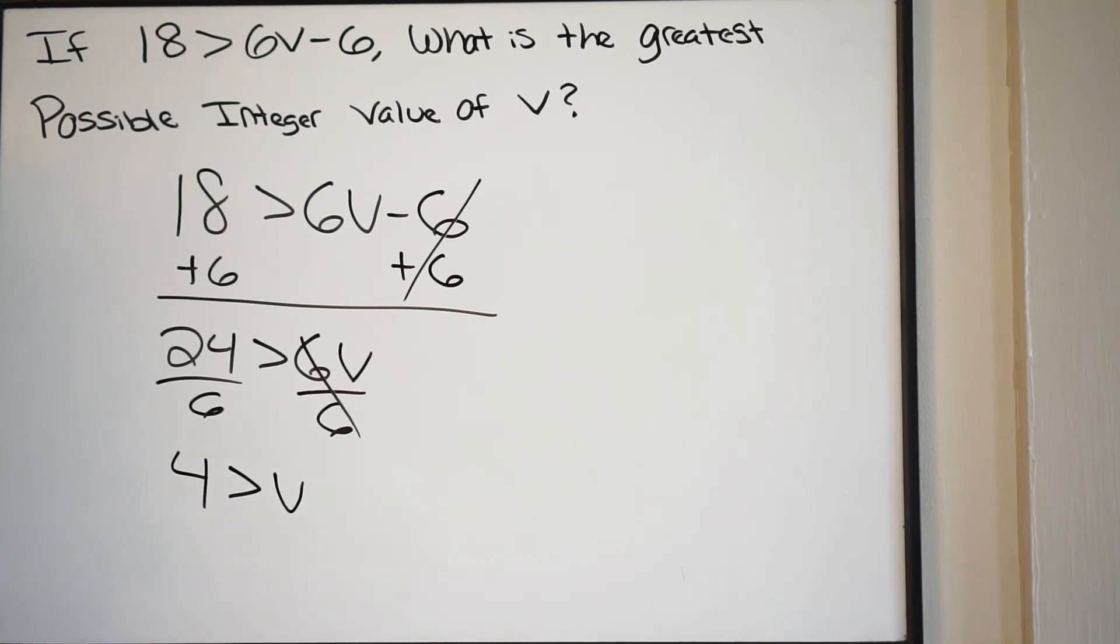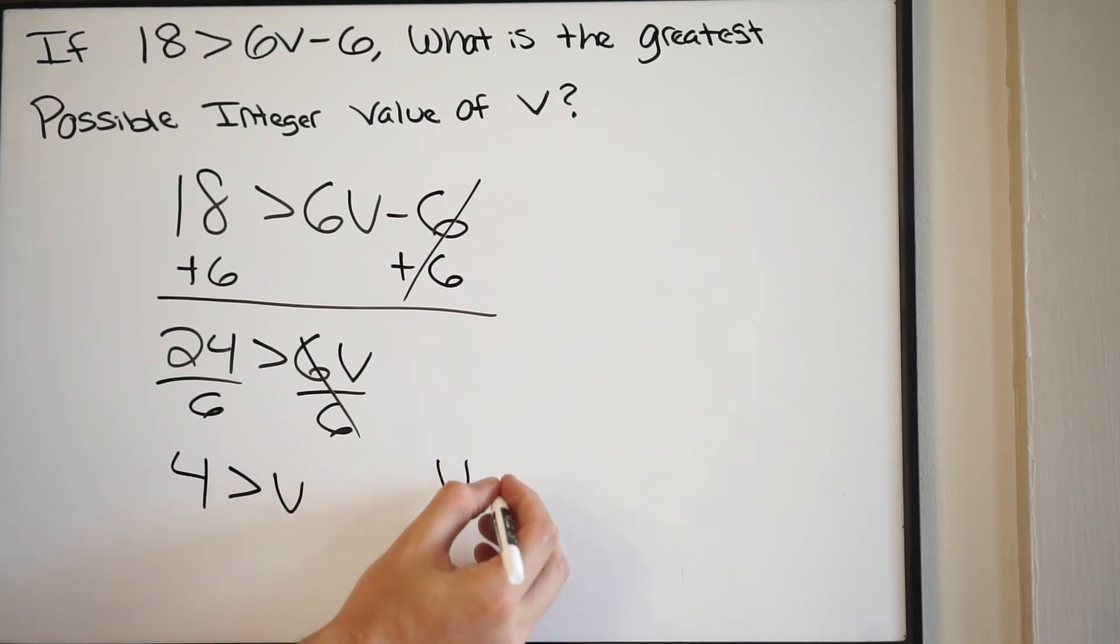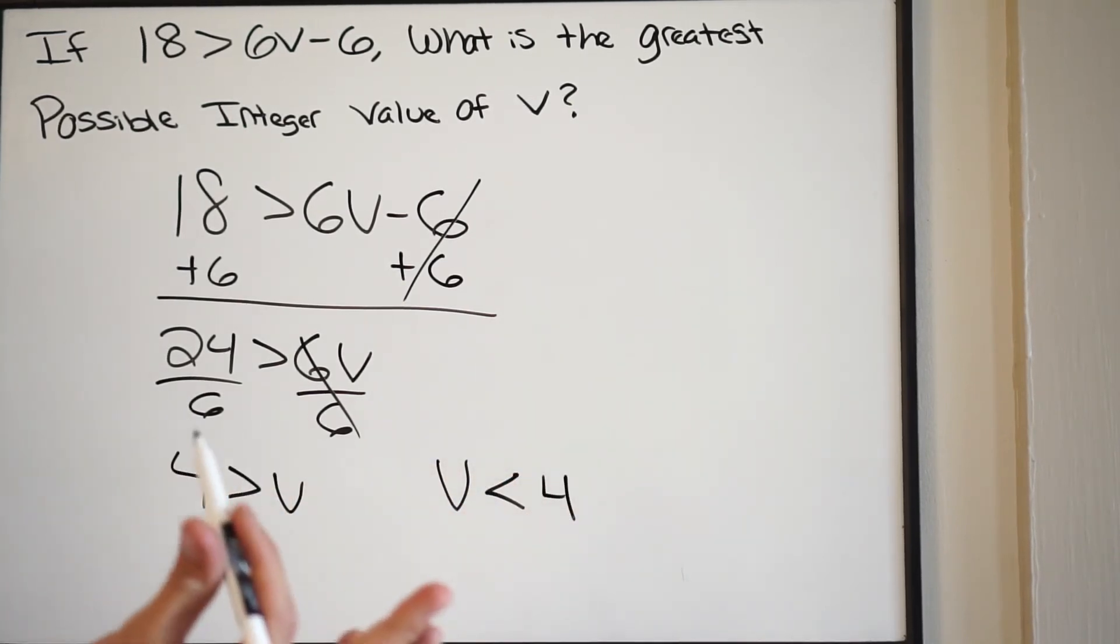Now I like to rewrite this so that the variable is out in front. So just rewriting this, I'm going to have v is less than 4. So here is our final answer.